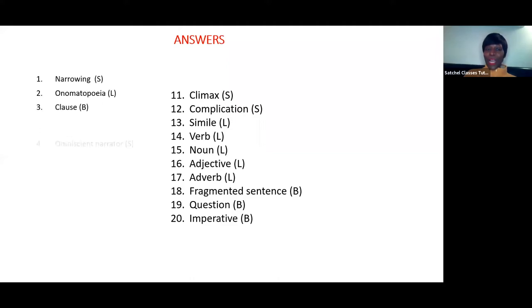I hope you were able to complete the task accurately. Narrowing is structure, onomatopoeia is language, and clause is both. Omniscient narrator is structure, widening, referring back, flashback, foreshadowing, concealing, resolving, climax, and complication are structure. Simile, verb, noun, adjective, and adverb are language, and fragmented sentence, question, and imperative are both because they're about sentences.